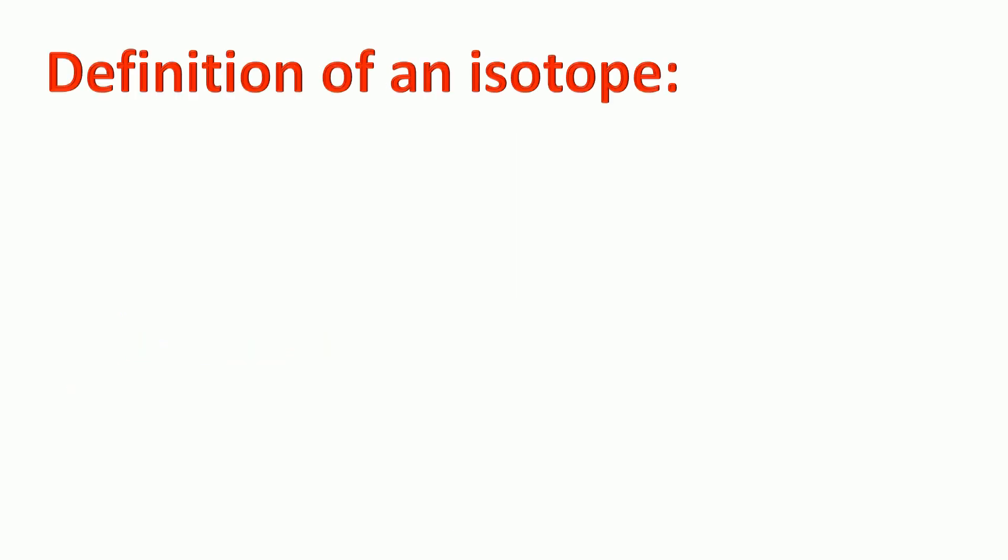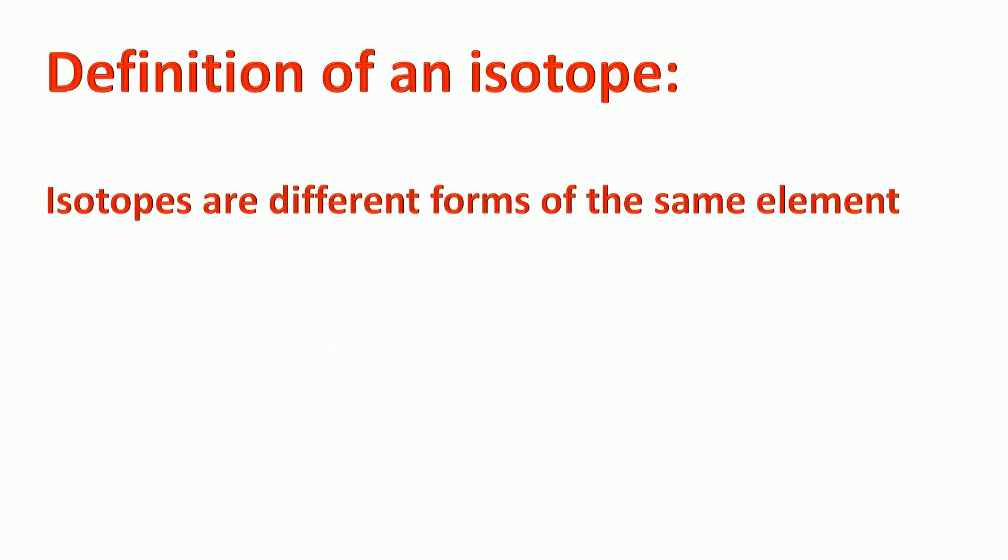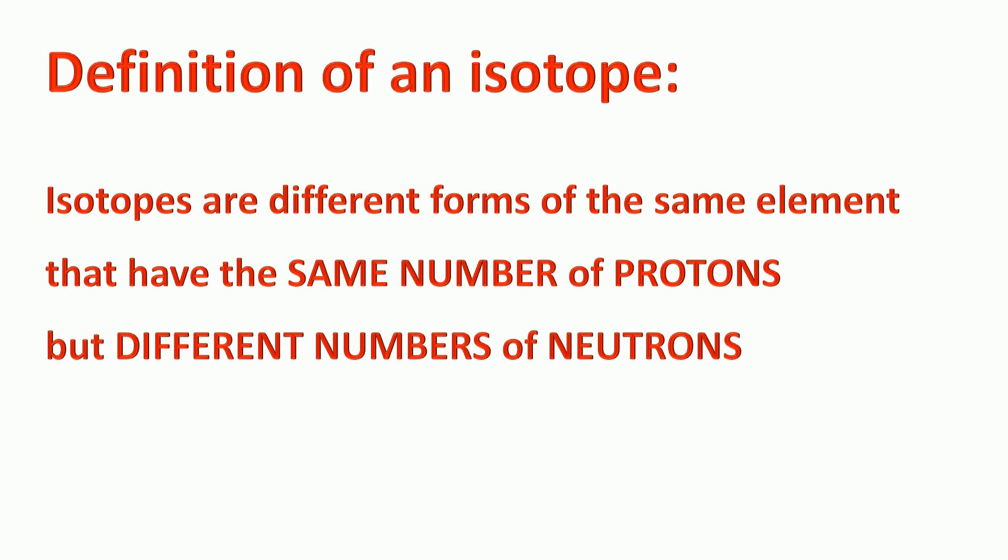That leads on quite nicely to our definition of an isotope. Isotopes are different forms of the same element that have the same number of protons but different numbers of neutrons. Make sure you learn this because it will be a two mark question on your exam.